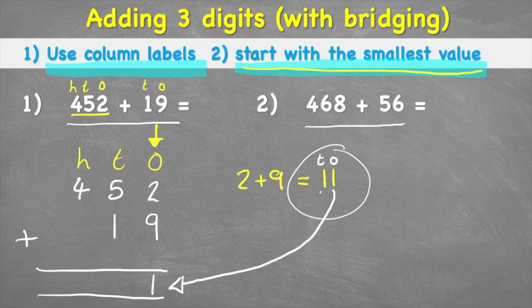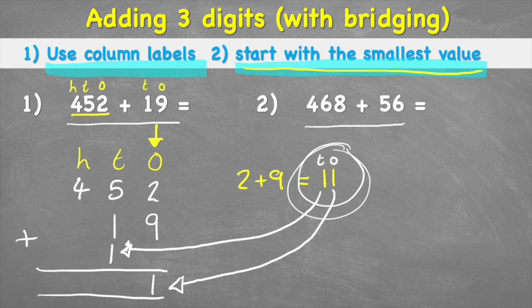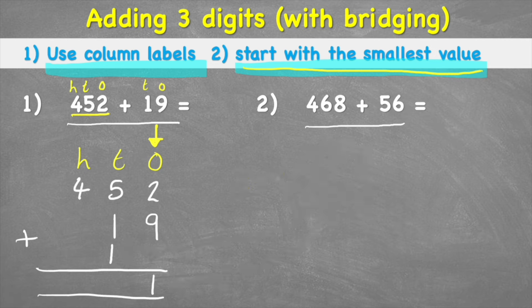I can put the one from the tens column up here and add it to my tens that are waiting to be added. I've just split this 11 into its ones and tens — the fancy word is partitioning that 11.